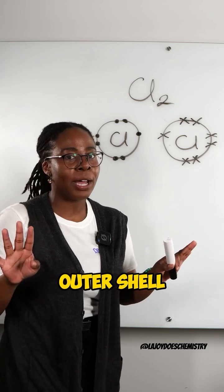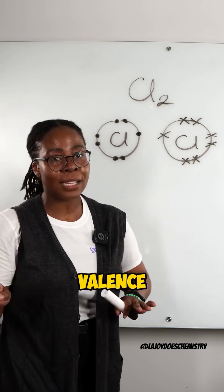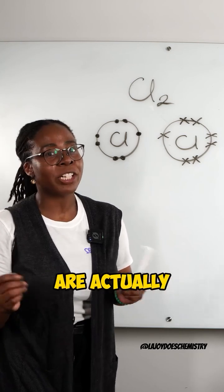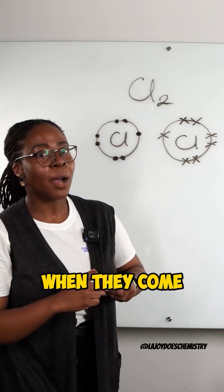We only need to show the outer shell because these are what's called the valence electrons or the bonding electrons, the only ones that are actually going to be involved when they come and join together.